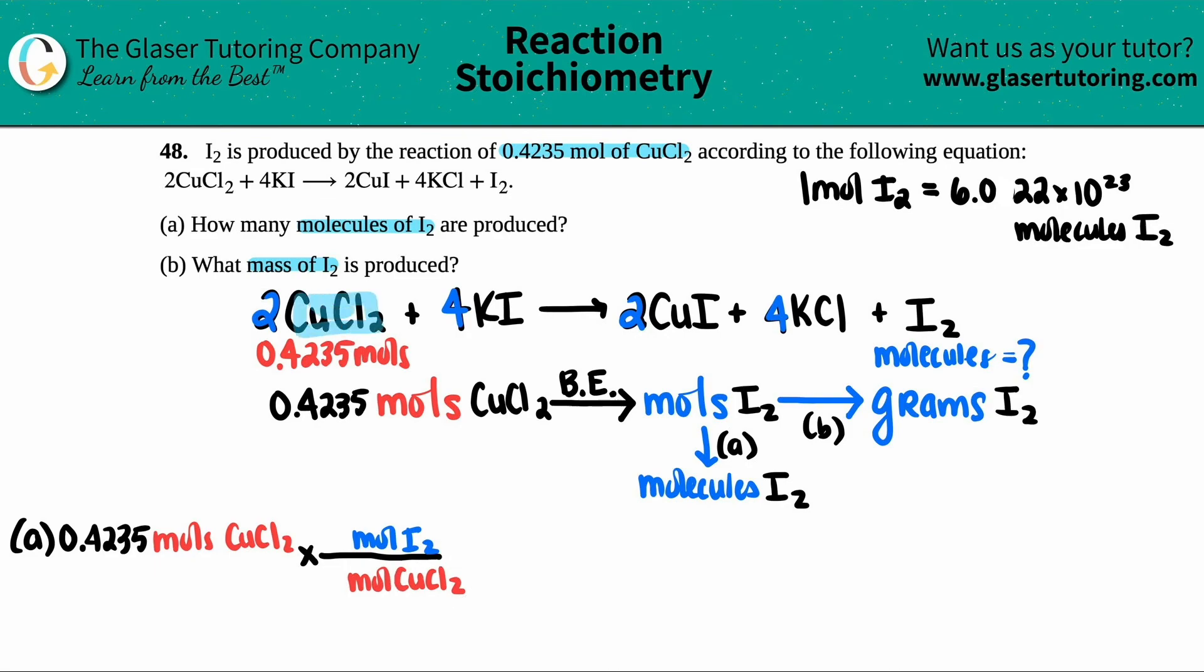So for CuCl₂, I see that there's a two coefficient in the front. So I'm going to put a two down here. Two goes with the CuCl₂. And for the I₂, I see that I don't have a number. Remember, it's just a one, right? So I'm going to put a one in front of here.